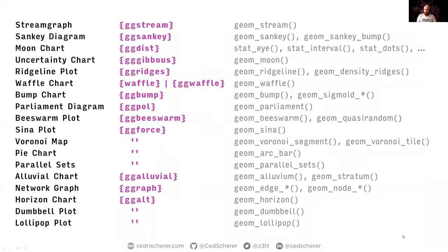That's the chart type section. There are many more packages on the list — including ggpie with a dedicated geom_arc_bar so you don't need to wrestle with coord_polar, and packages for parallel sets and alluvial charts. Thomas Lin Pedersen prefers to call them all parallel sets, but there's also a dedicated package for alluvial charts specifically.